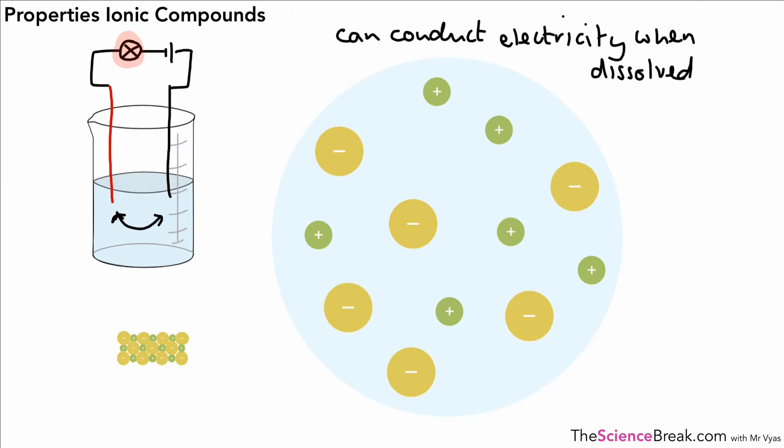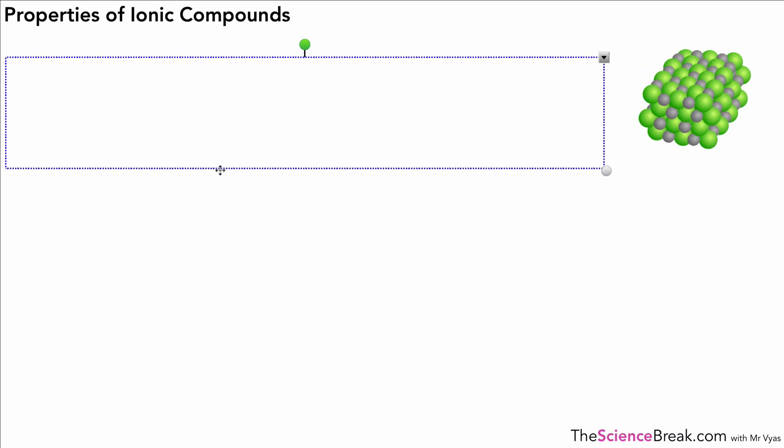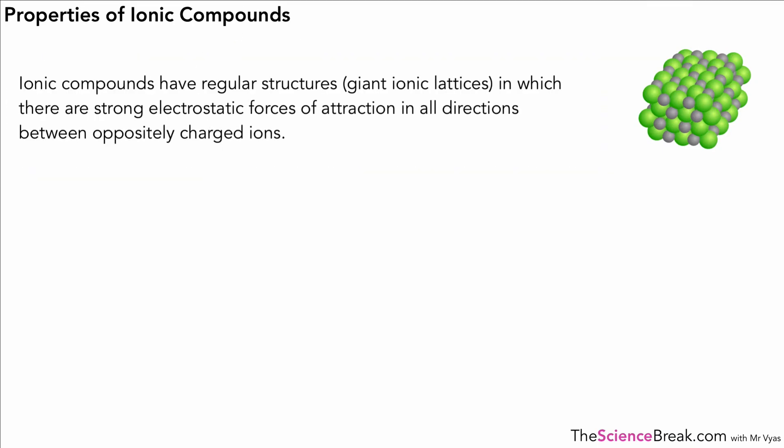Okay so we can now have an overview of our ionic compounds. The first thing here is that ionic compounds have regular structures, giant lattice structures, in which there are strong electrostatic forces of attraction in all directions between oppositely charged ions. All very important points if you're answering exam questions to explain properties of ionic compounds.